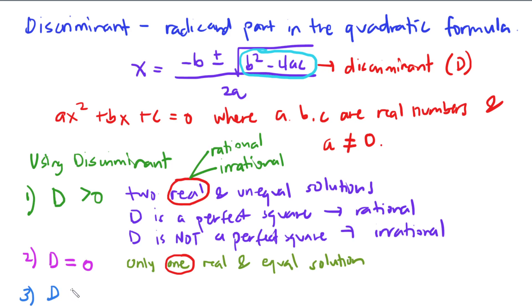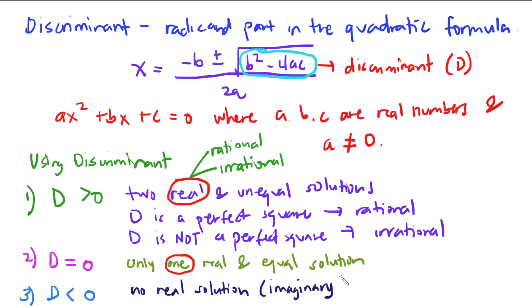For number three: if your discriminant is less than zero, you have no real solution. This is because if your discriminant is less than zero, it will become an imaginary number, denoted by the letter i. That is how you characterize the roots of a quadratic equation using the discriminant.